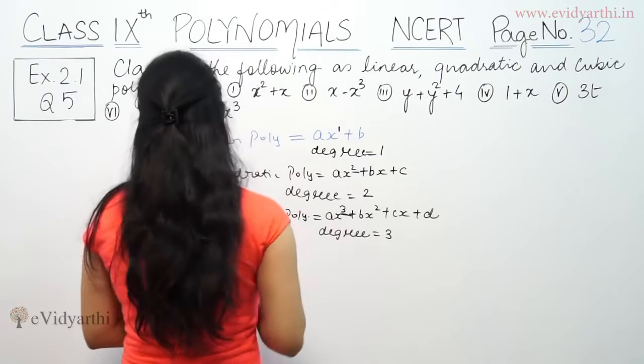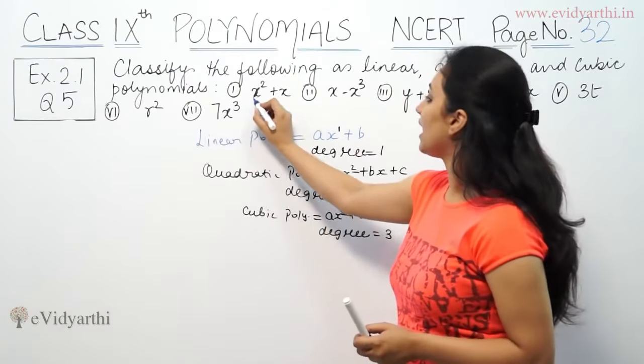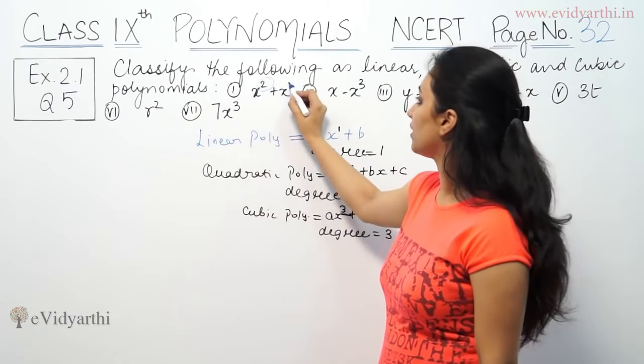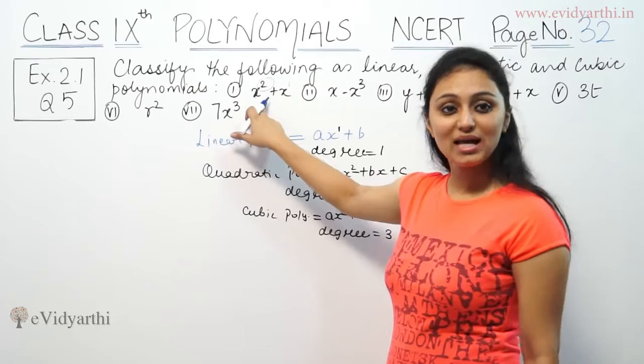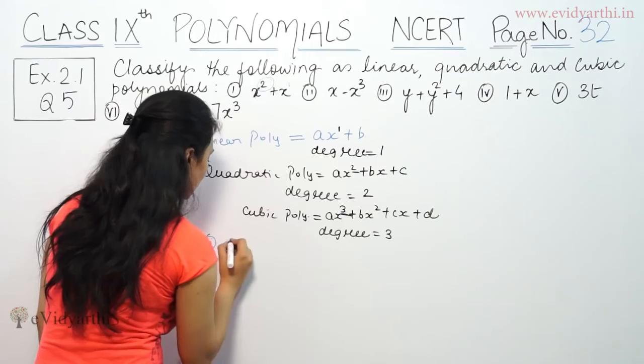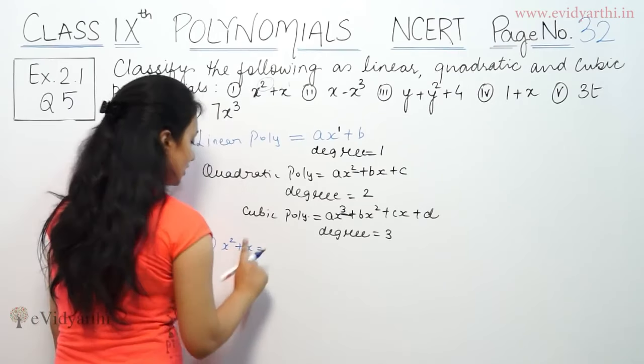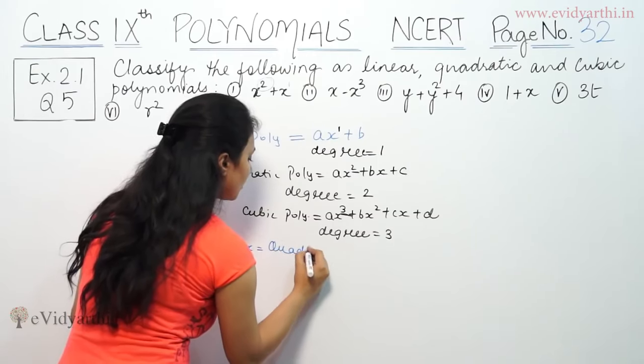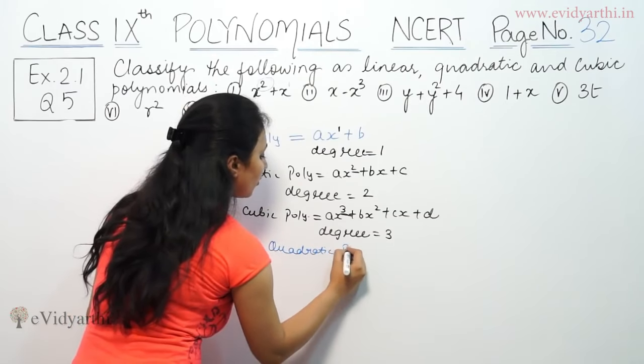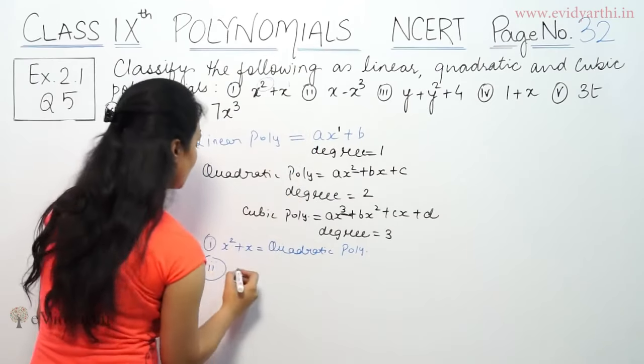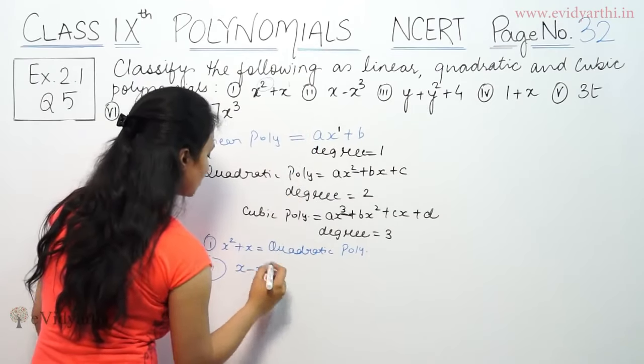Now we can classify them. First, we have given x² plus x. Highest power is 2. So this is quadratic.